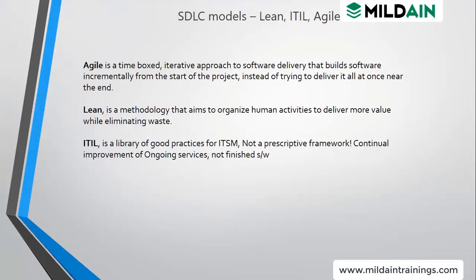Now the next topic is Lean, ITIL, and Agile. Agile is an approach for software delivery processes where we do work in an incremental manner. When the project is started we don't take the complete scope; we divide the project tasks into sprints — small two-week sprints. Once the sprint is complete it is incremented, so it is an incremental approach.